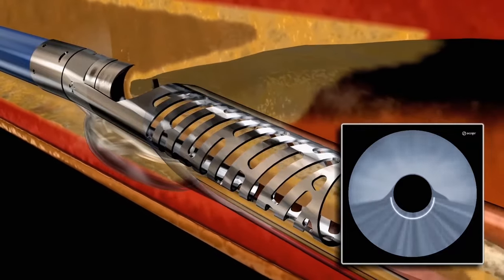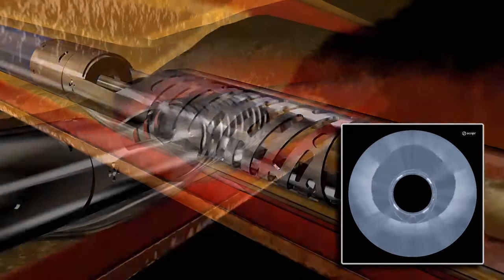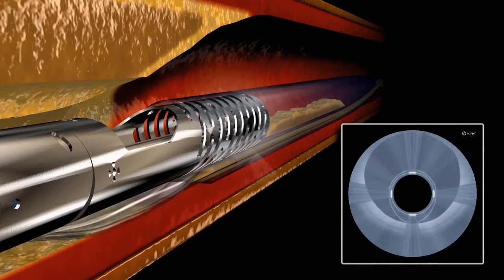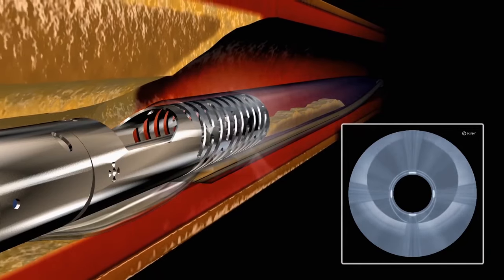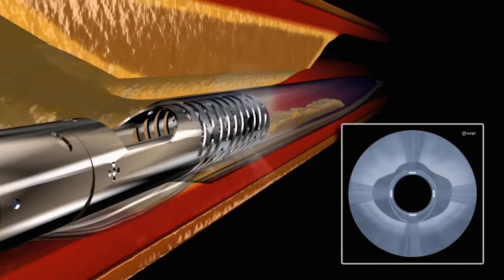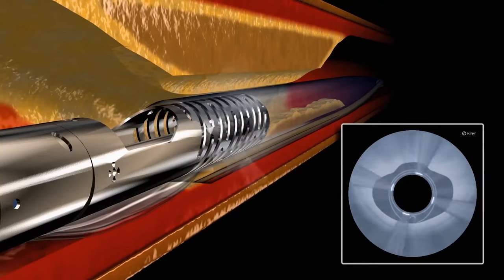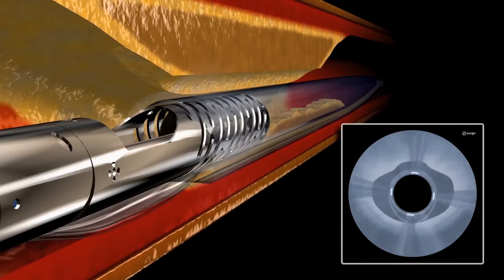An onboard imaging system combines with the plaque excision mechanism to provide live views from inside the artery, indicating which treatment areas to target and which areas to avoid in order to preserve the native vessel architecture.